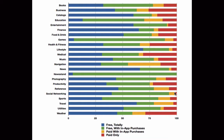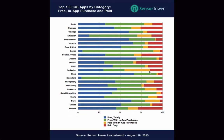On the other end of the spectrum, there are other categories such as Weather, Navigation, and even Business, where people are more willing to pay for an app upfront. As you can see, in the Navigation category, people are definitely willing to pay for the app upfront and pay for some other things down the line. So your app pricing is definitely going to depend on what category you're in.